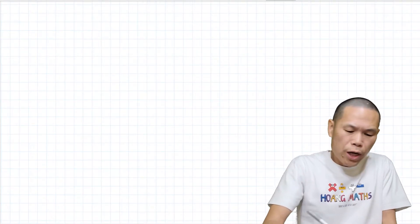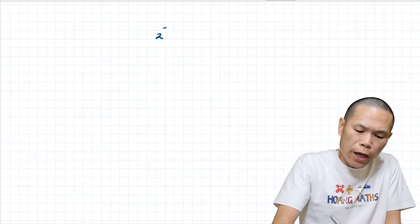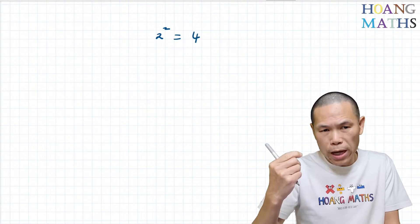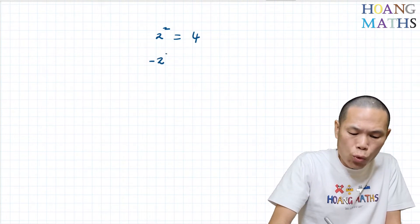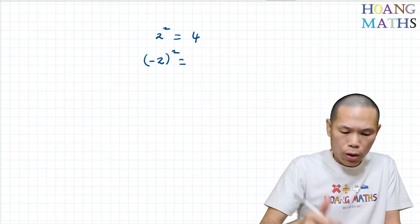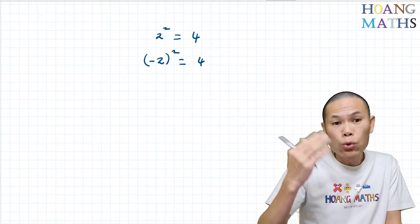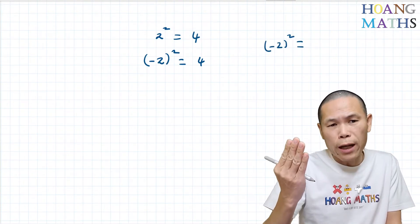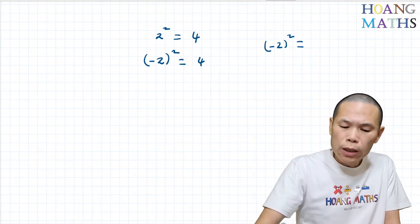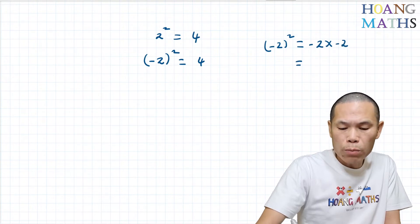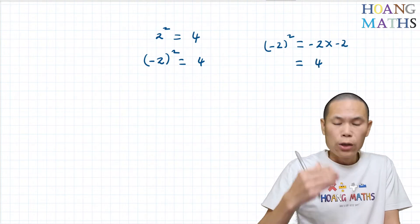So first of all, we know that 2 squared is equal to 4, because 2 squared is 2 times 2. Or we have negative 2 all squared — negative 2 all squared also gives me 4, because negative 2 times negative 2: two negatives together give a positive, so 2 times 2 is 4.